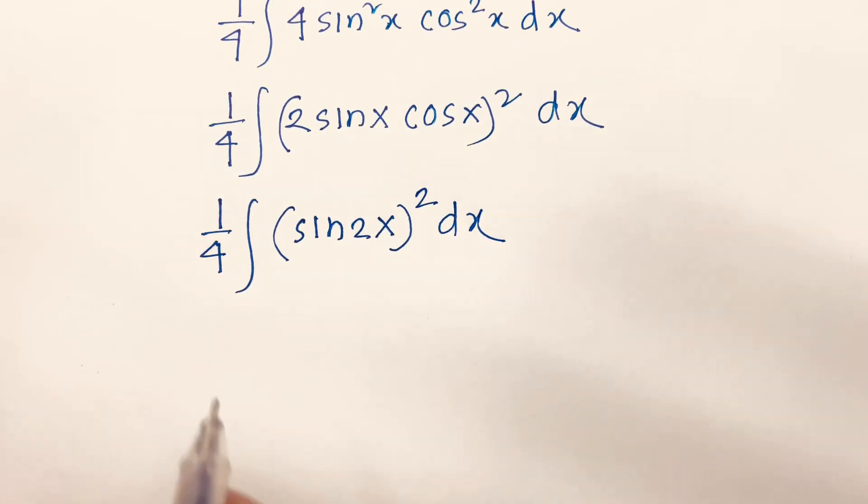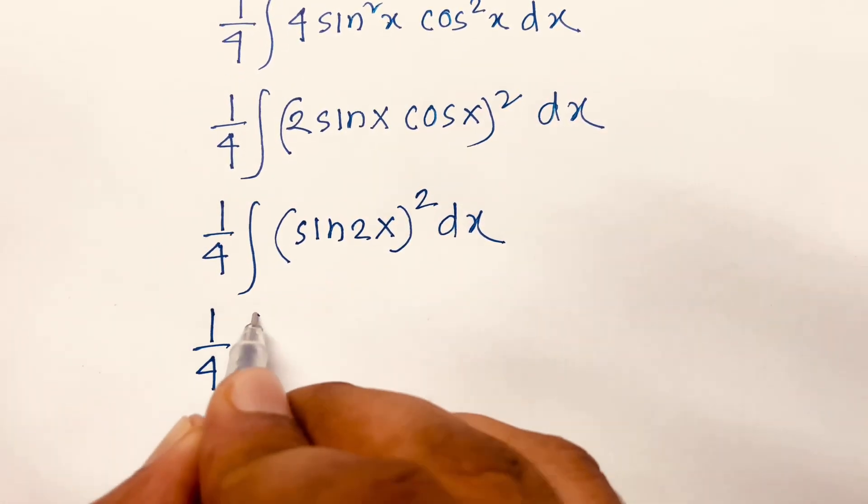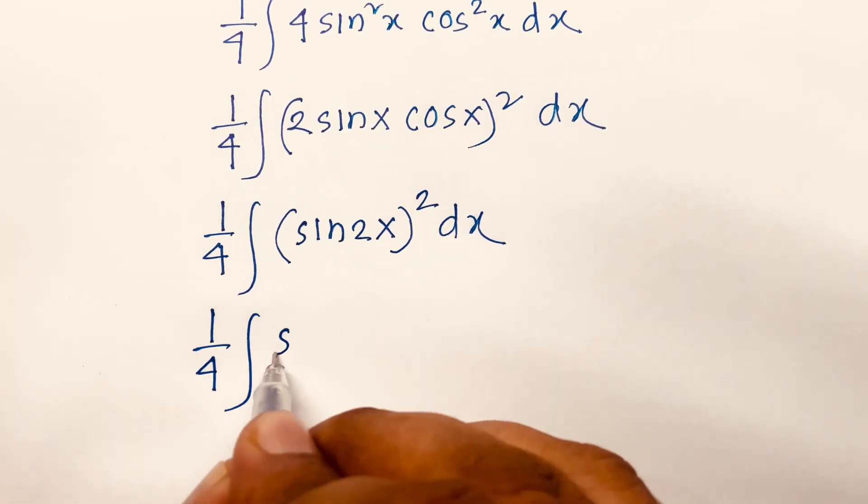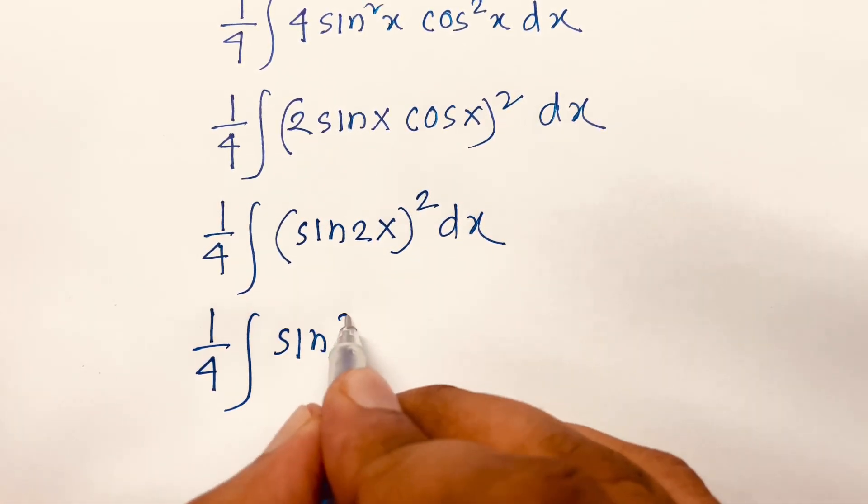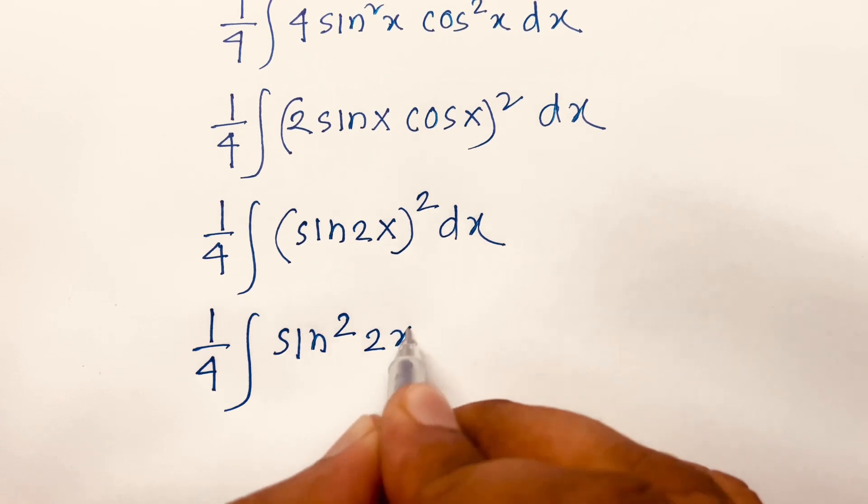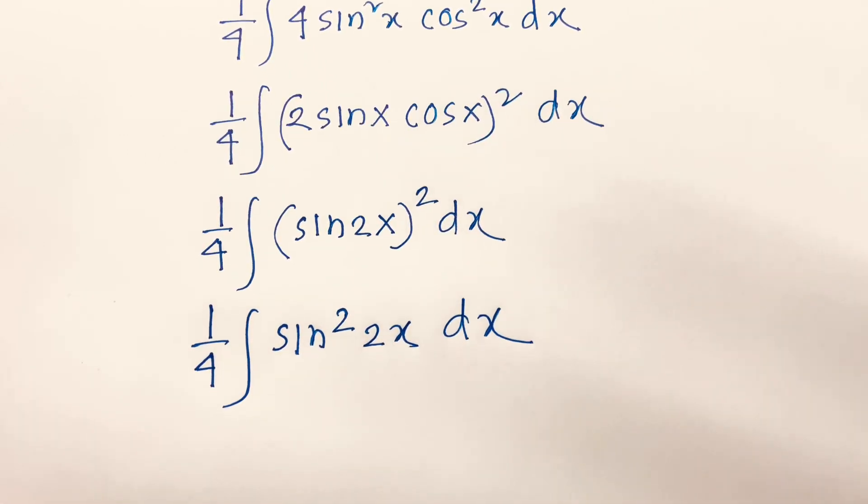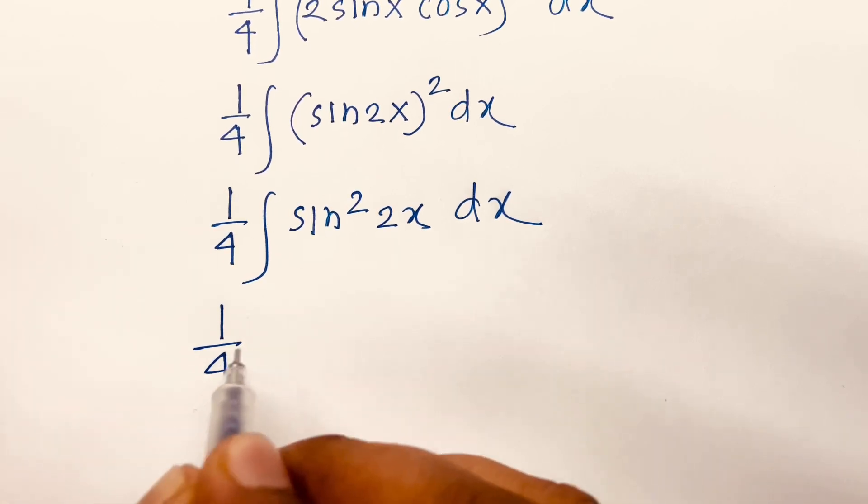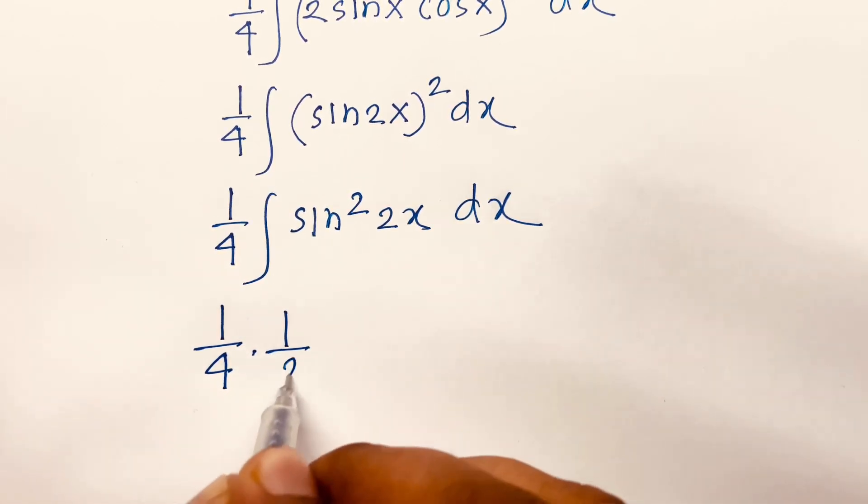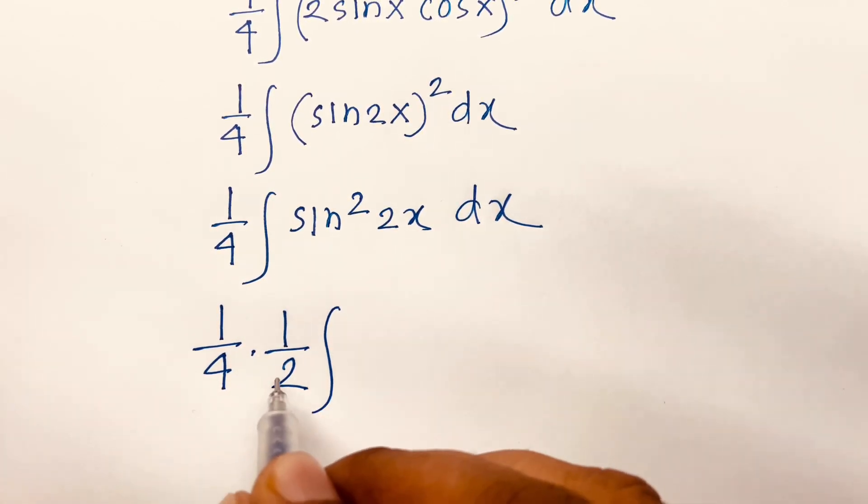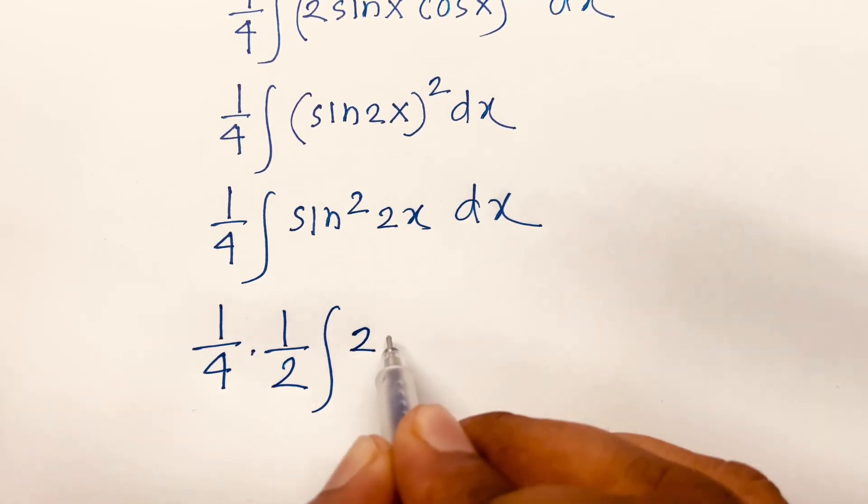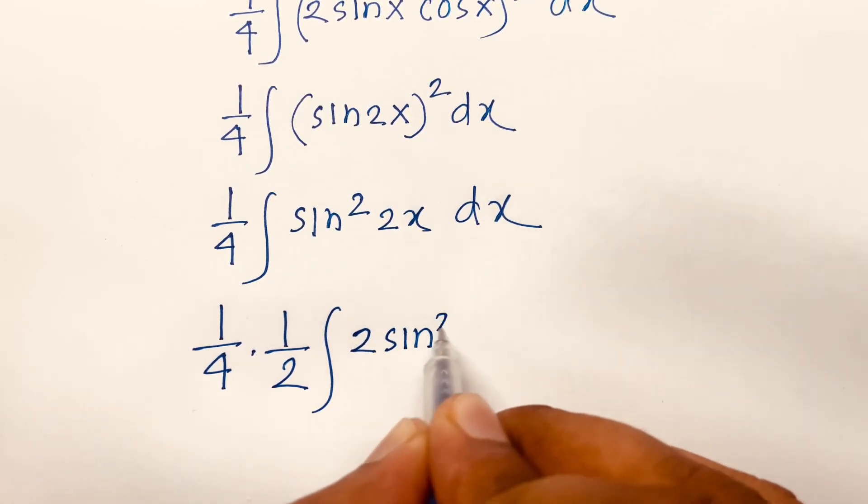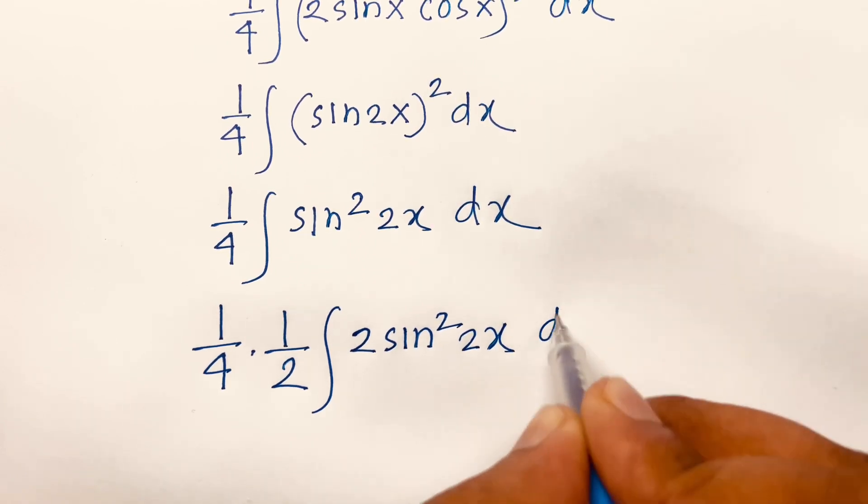Then, I can say 1 over 4 integral of sine square 2x dx. Then, it will be 1 over 4 times 1 over 2 integral of 2 sine square 2x dx.